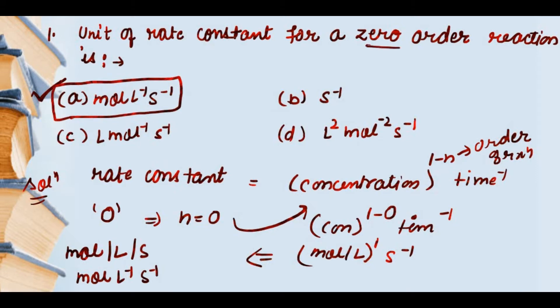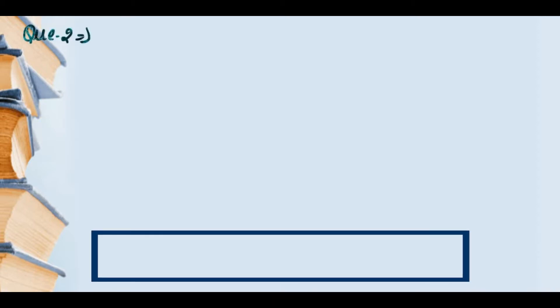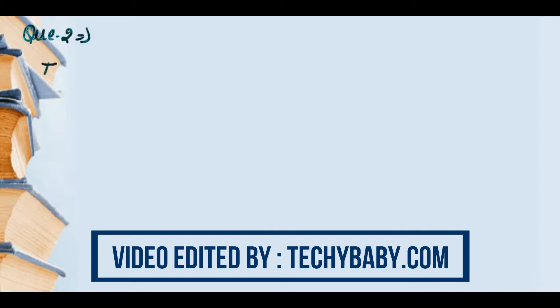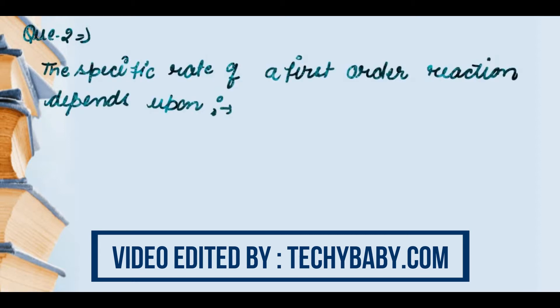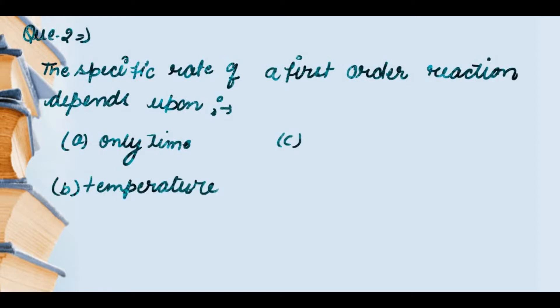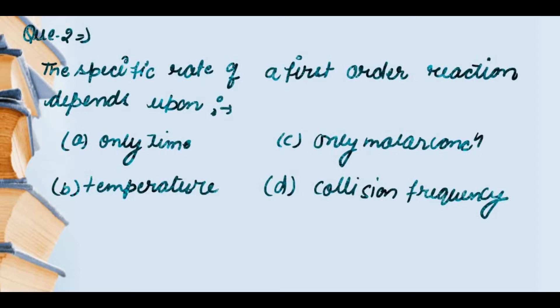So the answer is option (a) — mol liter inverse second inverse. This is the unit of rate constant of a zero order reaction. Now question number 2: the specific rate of a first order reaction depends upon — options are (a) only time, (b) temperature, (c) only molar concentration, (d) collision frequency. The specific rate of a first order reaction depends only on molar concentration, so the answer is option (c).